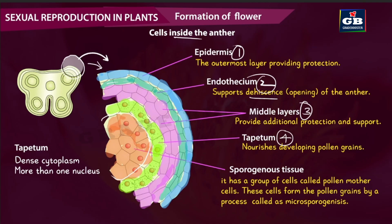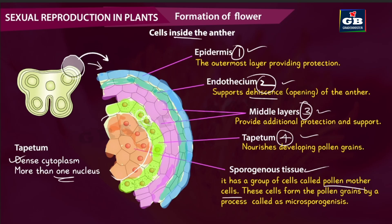The tapetum nourishes the developing pollen grains. It has special features: dense cytoplasm and more than one nucleus — tapetum cells can have two nuclei. This layer provides nourishment to the inner sporogenous tissue. The sporogenous tissue is protected by four layers: epidermis, endothecium, middle layers, and tapetum. The sporogenous tissue contains a group of cells called pollen mother cells, also called microspore mother cells or PMCs.